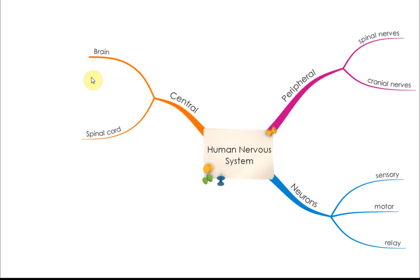Now for the brain, there are a few things that we need to know in our syllabus. We need to know the structure and functions of the brain — for example, what is the cerebrum, what is the cerebellum, and what is the medulla oblongata. You need to know the name and the function, and we also need to know the two types of actions: the voluntary actions and the involuntary actions.